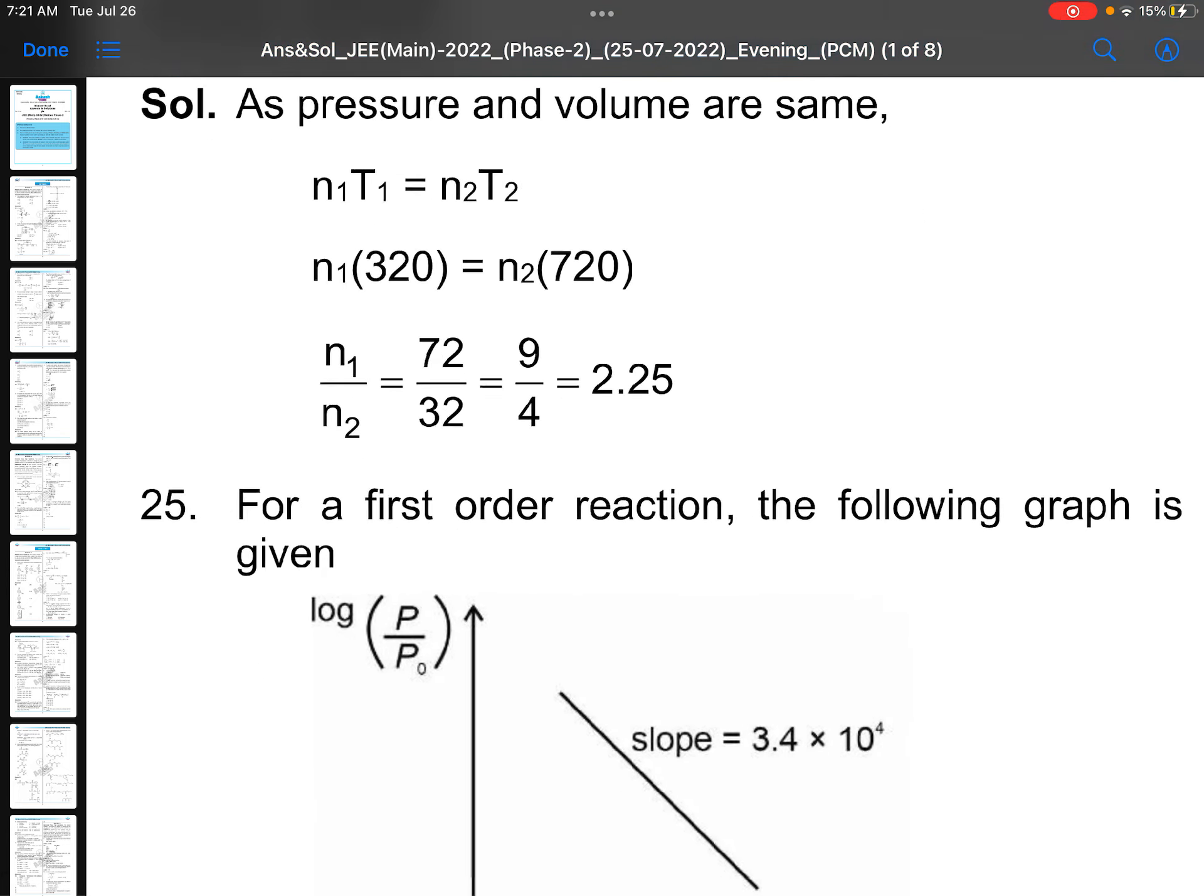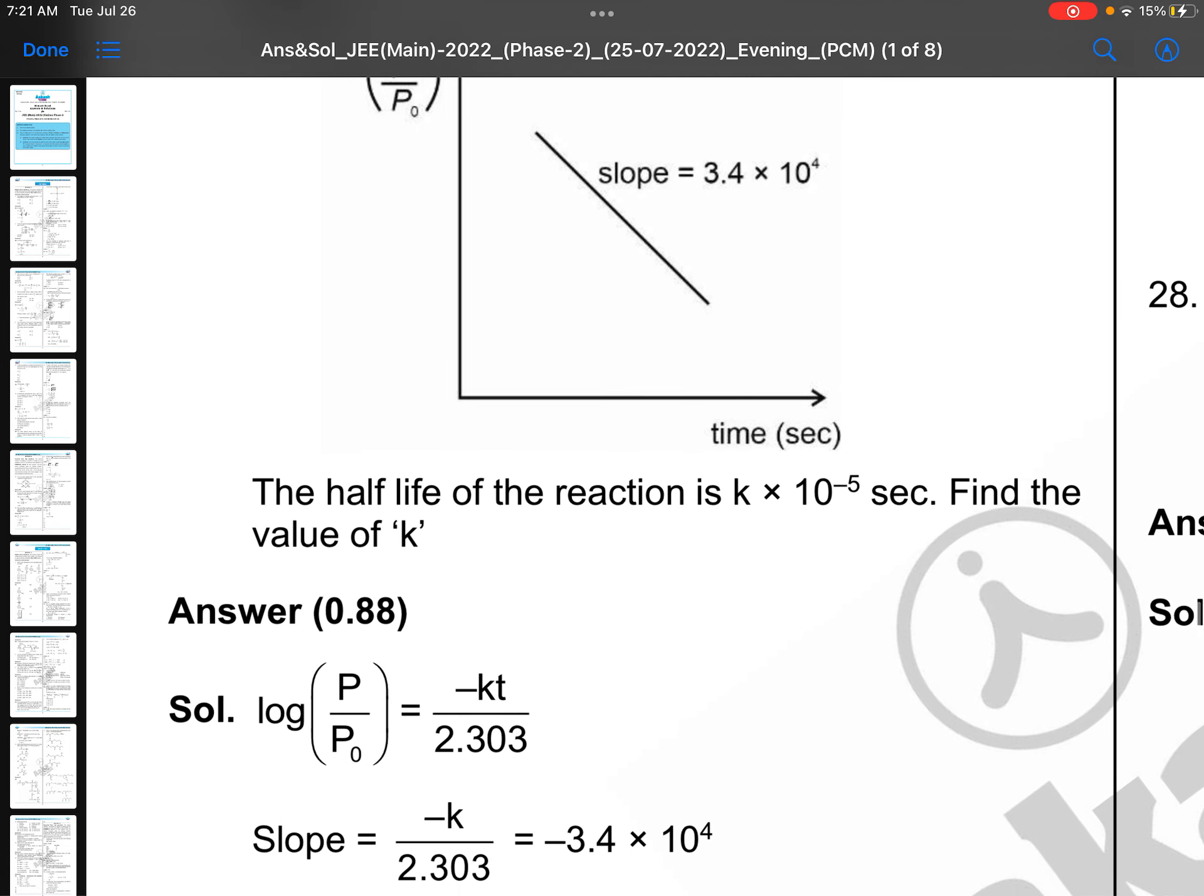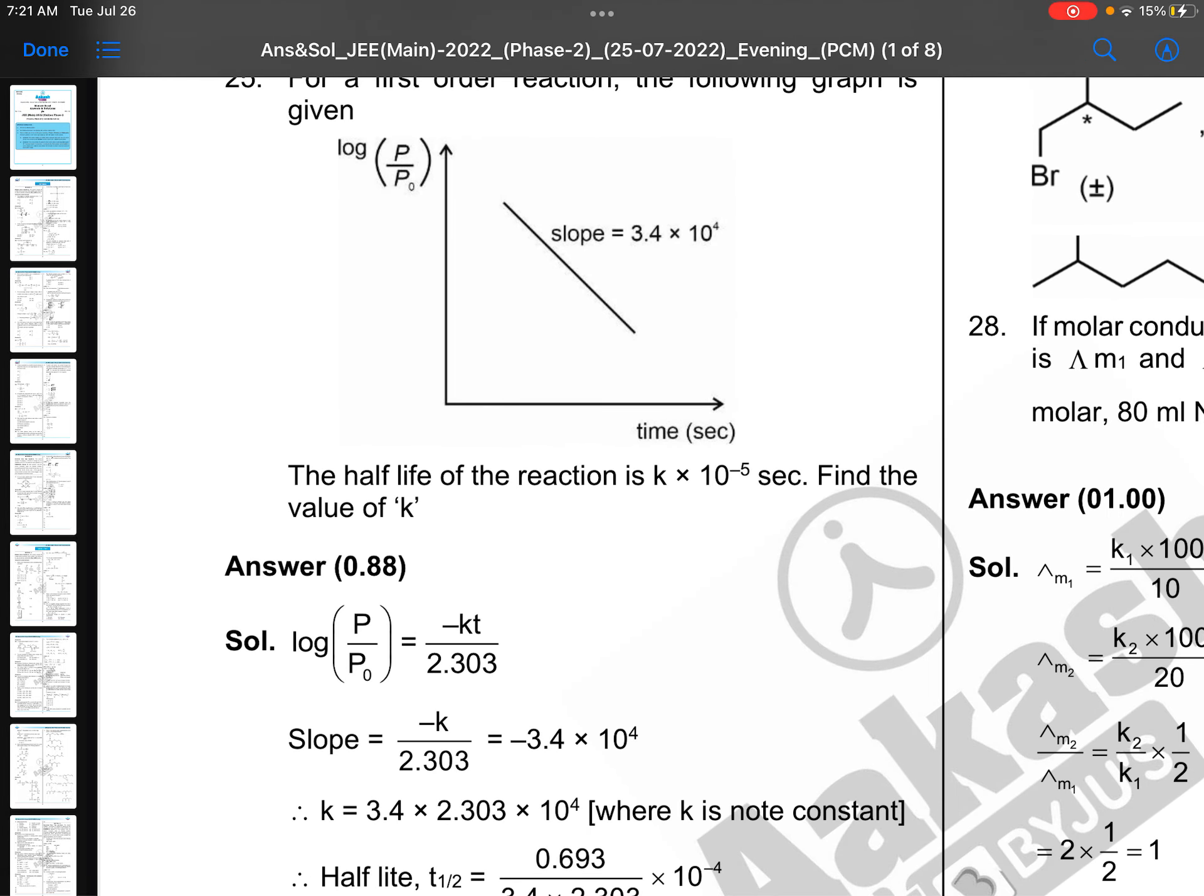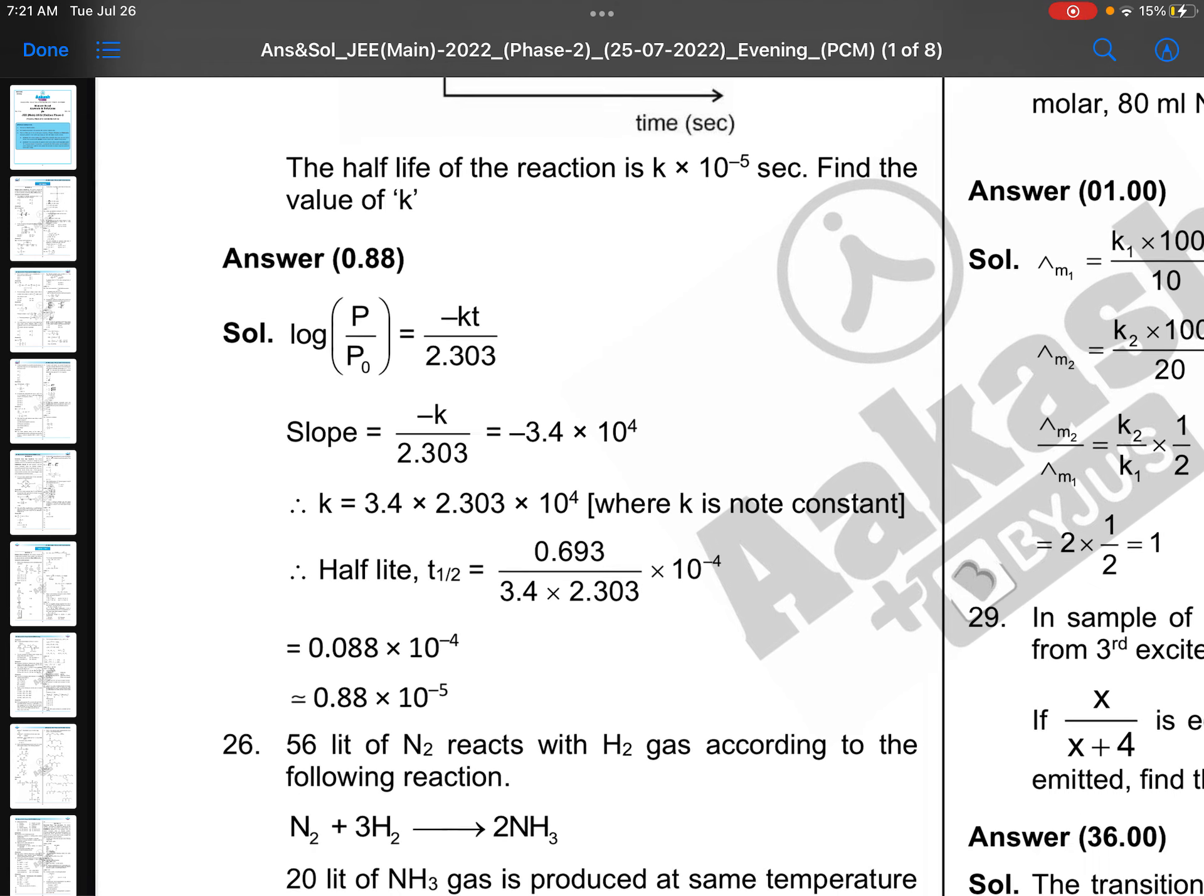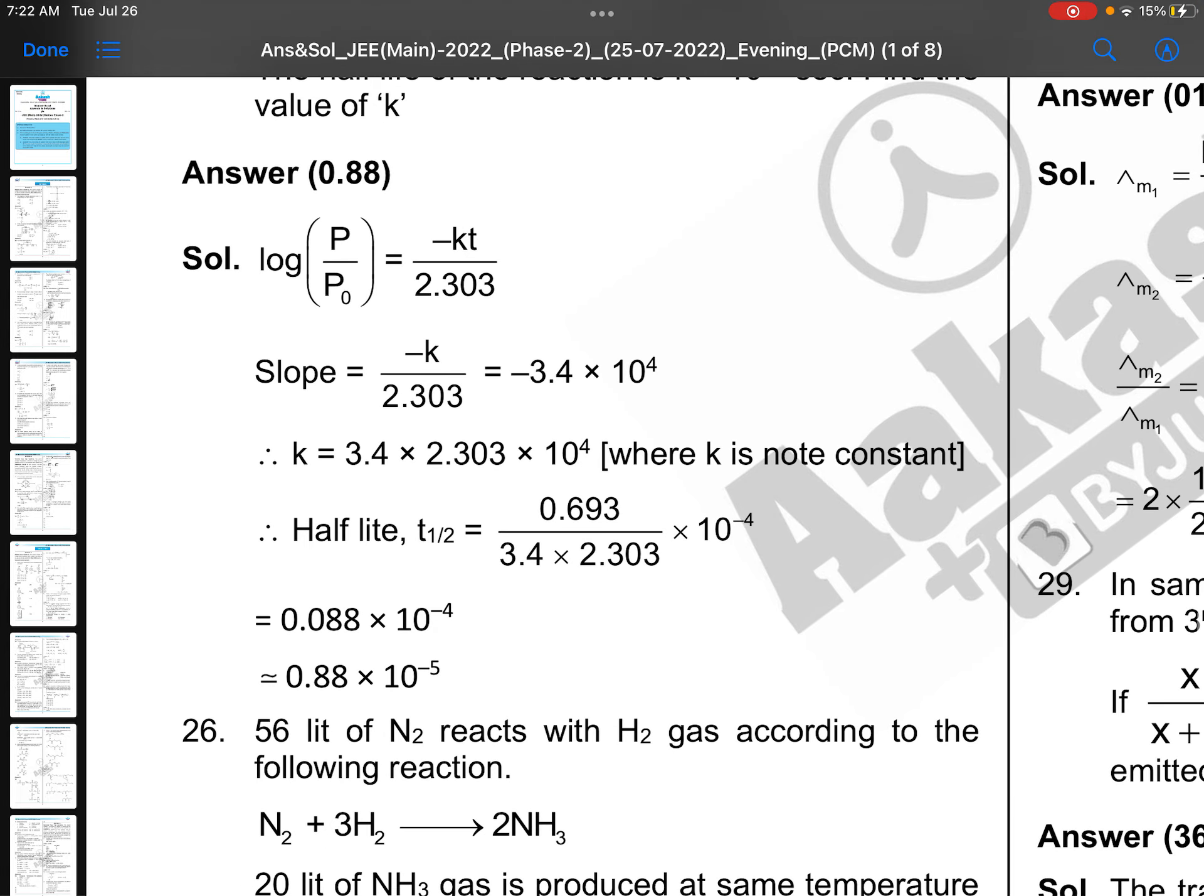For a first order reaction, the following graph is given, and he is asking half life of the reaction is k in 10 power of minus 5. What is the value of k? This is little time taking. You need to go through with this one. log P by P naught is equals minus kt by 2.303, and after that half life of first order reaction equals to 0.693 by k. Time taking, just check whether you can solve it or not, but the formula you remember, that's enough.